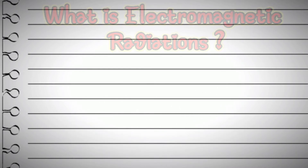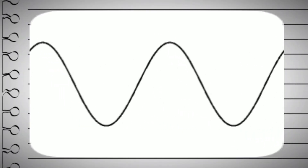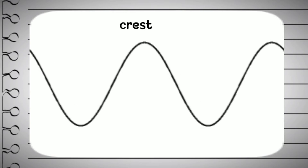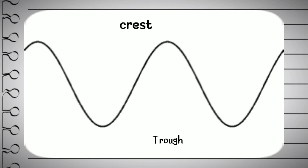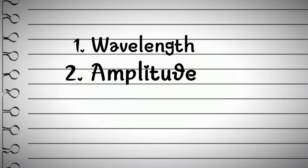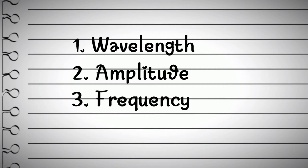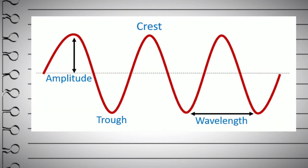Waves travel in space in this manner. Here the highest point of a wave is known as its crest and its lowest point is known as its trough. We need to know three definitions for better understanding of waves: wavelength, amplitude, and frequency. Wavelength is the distance between two successive crests. For better understanding, see the diagram — the distance from point A to point B is the wavelength.